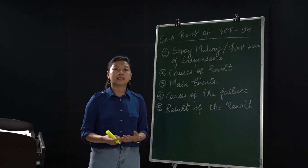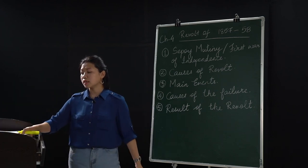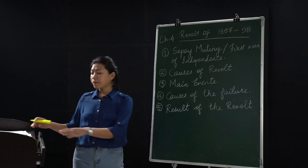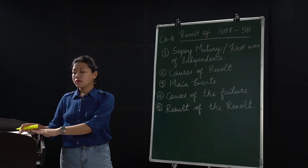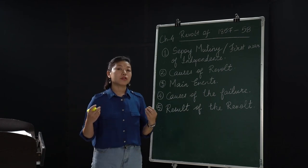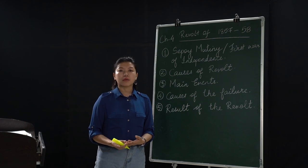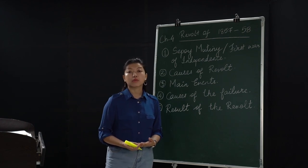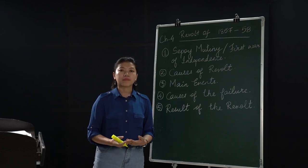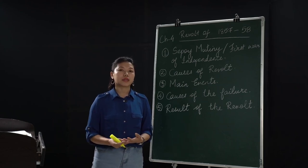The revolt spread especially to Lucknow, Delhi, central India, Banaras, and Jhansi — these were the main areas. The important heroic figures of those days were Tantya Tope, the Rani of Jhansi, Nana Sahib, and Kunwar Singh. They were the main leaders who led other citizens of India, encouraged them to join the revolt, and fought against the British.